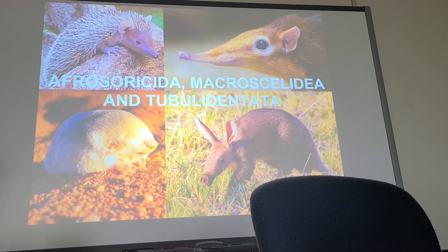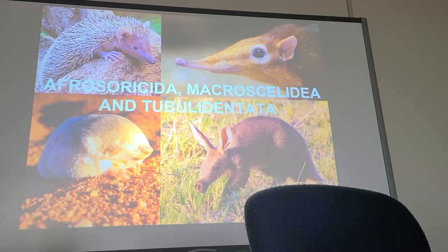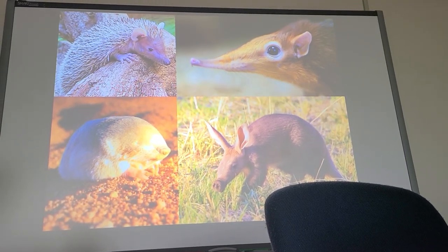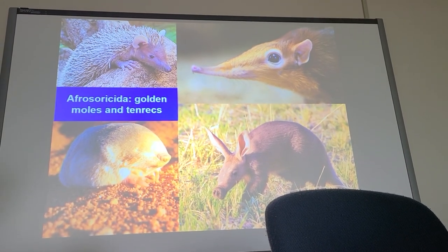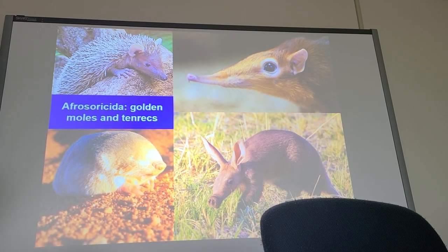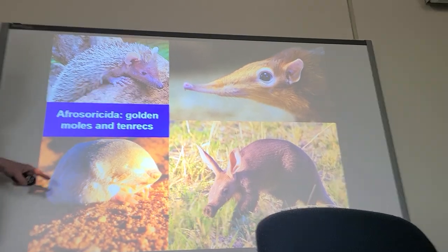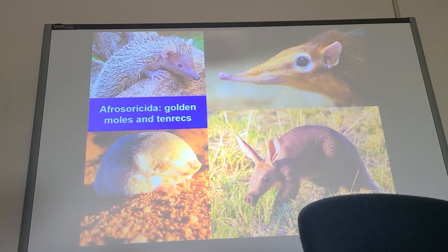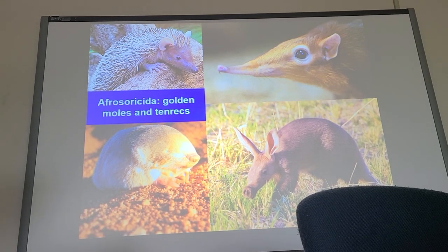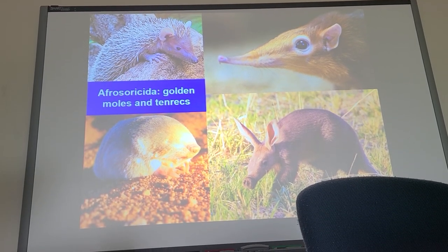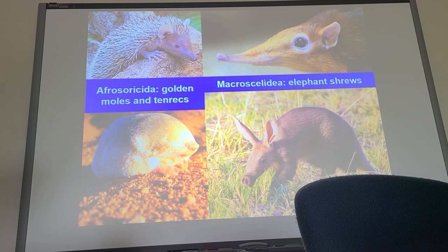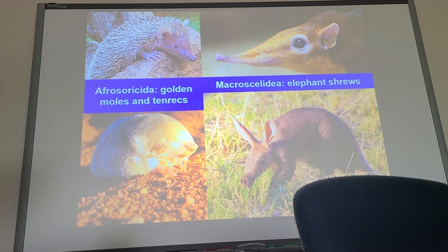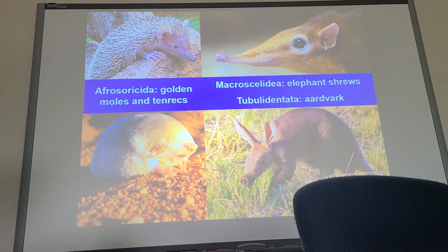The two examples in Afrosoricida are a golden mole and a tenrec. The next order, Macroscelididae, contains the elephant shrews. And then finally, Tubulidentata is the aardvark.